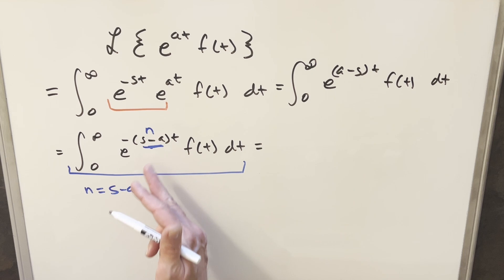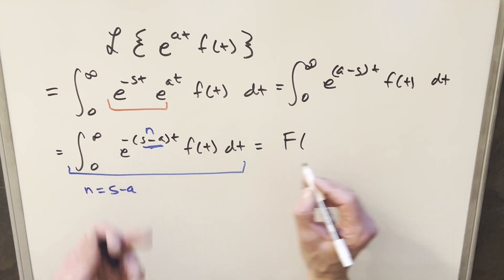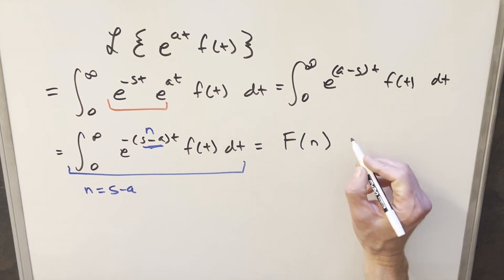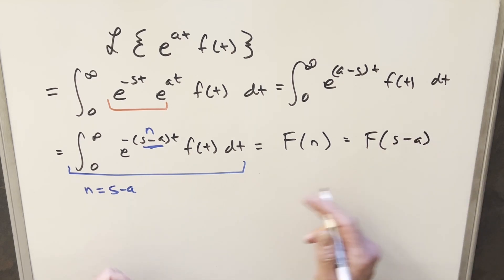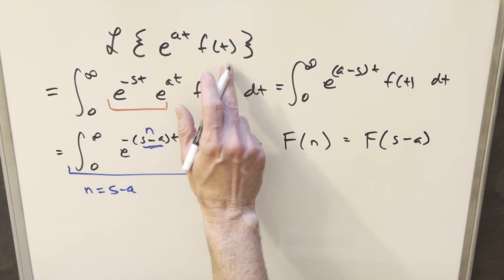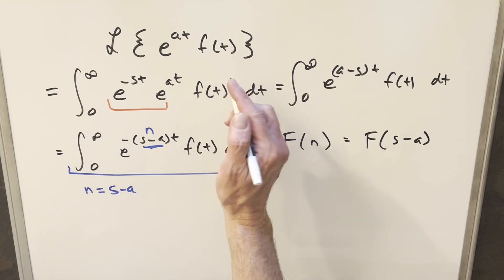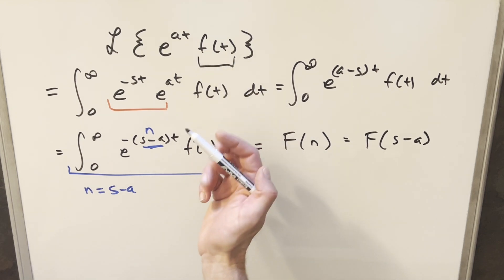So then doing it this way, if you just picture plugging in here, this is actually just the Laplace transform of this function. But instead of getting a function in terms of s, now we have a function in terms of n. But again, n is just s minus a. So really what we have here is we're just saying that we're taking the Laplace transform, but our input now is this s minus a. And so all that happens when you have e to the at in front of some function is we need to know the Laplace transform of f of t.